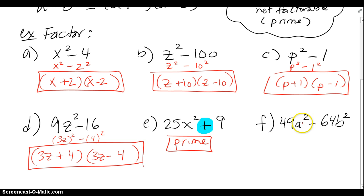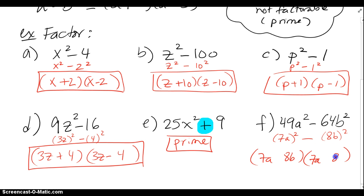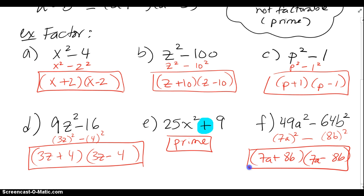For 49a squared minus 64b squared, 49 is a perfect square — that's 7a squared. 64 is a perfect square — that's 8 — and b is also squared. So I basically have one of each in my binomials: 7a and 8b, 7a and 8b, with plus and minus. And we're good to go.